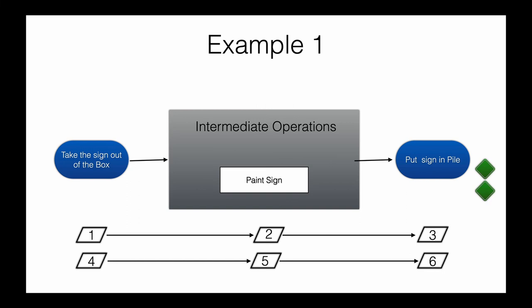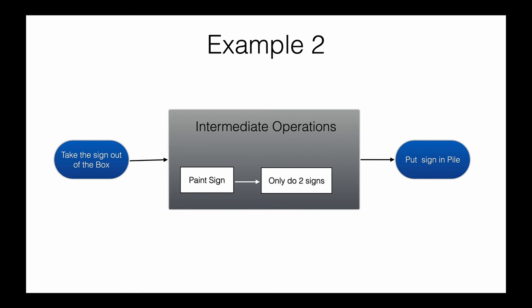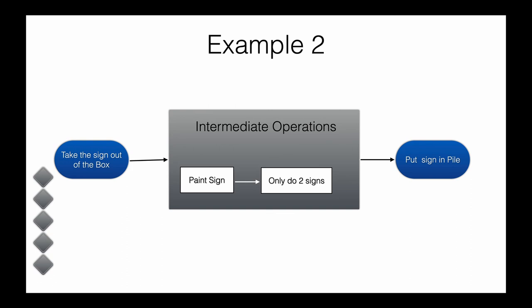In the second example, we take out the sign, paint it, but only want to do this for two signs, then put them in a pile. Java sets up four workstations: one to take out the sign, one to paint it, one to count how many signs have been painted, and one to put painted signs in the pile. With five signs in the box, the first sign is taken out, painted, counted as one, and placed in the pile. The second sign is taken out, painted, and the counter identifies it as the second sign, signaling to Java that the job is done. Java waits for that sign to be placed in the pile, and then the pipeline is terminated.